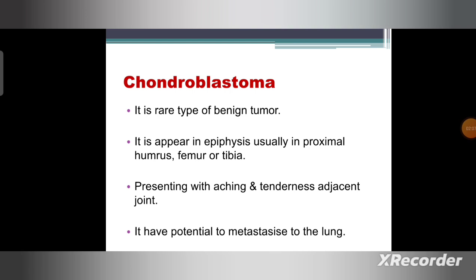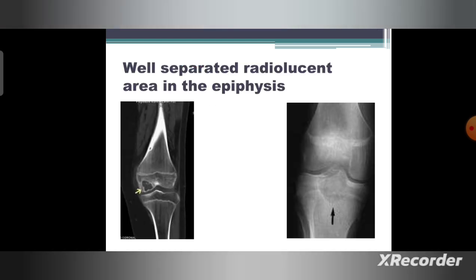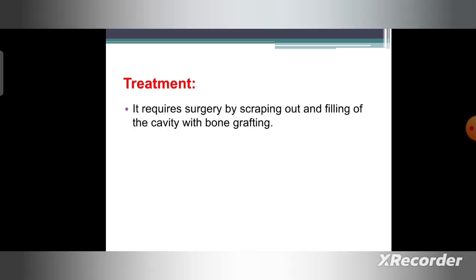Next is chondroblastoma, a rare type of benign tumor. It appears in the epiphysis, usually in the proximal humerus, femur, or tibia. It presents with aching and tenderness in the adjacent joint, and has the potential to metastasize to the lungs. This figure represents the chondroblastoma — it shows a well-separated radiolucent area in the epiphysis of the femur bone. It requires surgery by scraping out and filling the cavity with bone grafting.